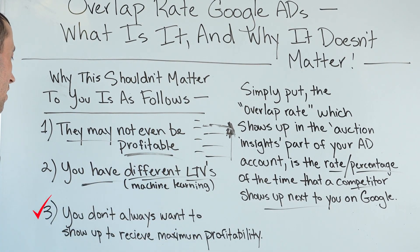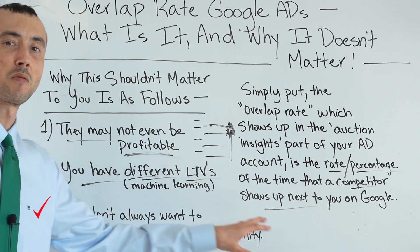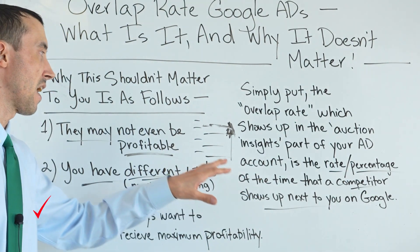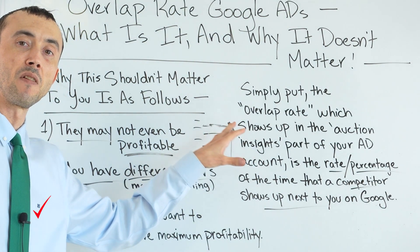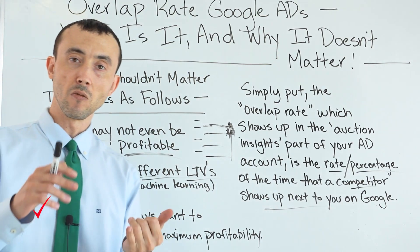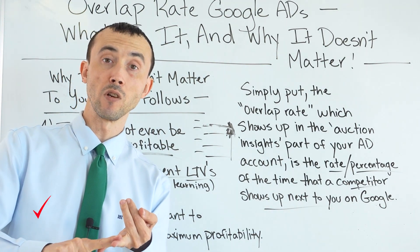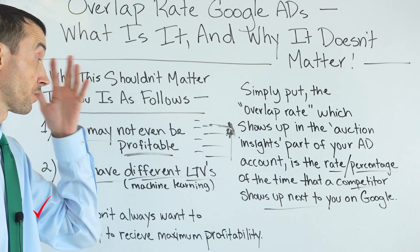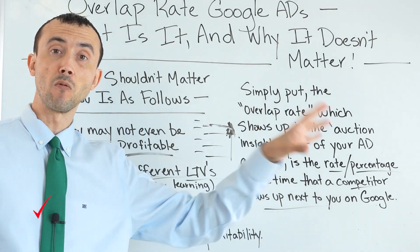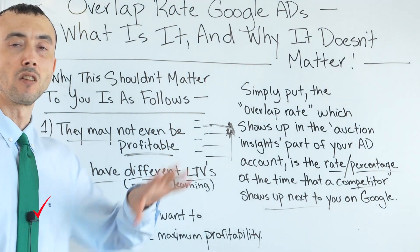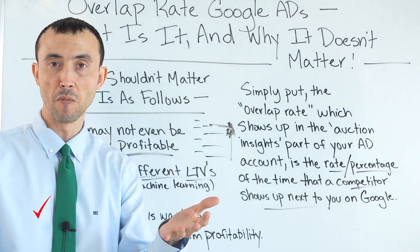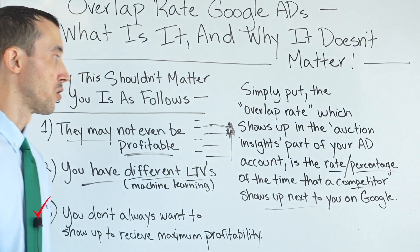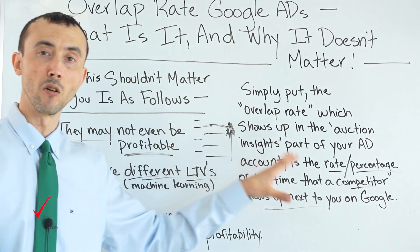Reason number three: you don't always want to show up in order to receive maximum profitability. There are certain keywords you only want to show up on 30% of the time, and not the other 70%, because that other 70% might represent males over 65, for example, where past ad data shows they weren't profitable. The algorithm that runs the ad auction decides who shows up and who doesn't — keeping you away from demographics that don't convert at the rate needed to get you a good return. It's actually to your advantage not to show up in those specific spots.